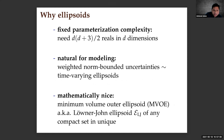Why ellipsoids? Ellipsoids have attractive properties as shape primitives. First, they have fixed parameterization complexity: a non-degenerate ellipsoid in d dimensions requires storing only d(d+3)/2 real numbers due to the symmetry of the positive definite matrix. This fixed complexity is important for CPS applications — for example, if you want to encode the shape primitive as a packet in a communication protocol, you want the parameterization complexity to be constant, which is not true for polytopes.